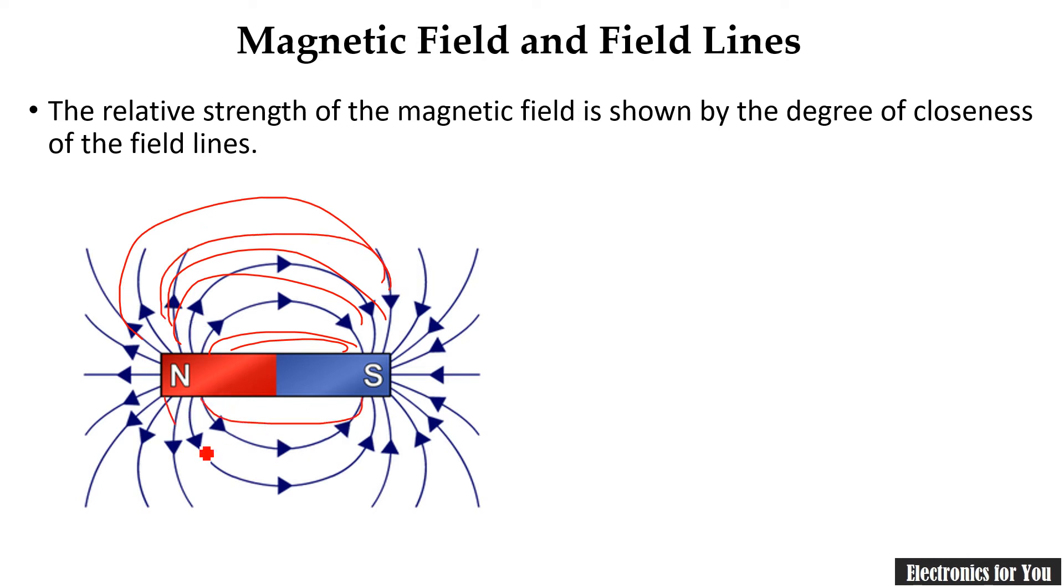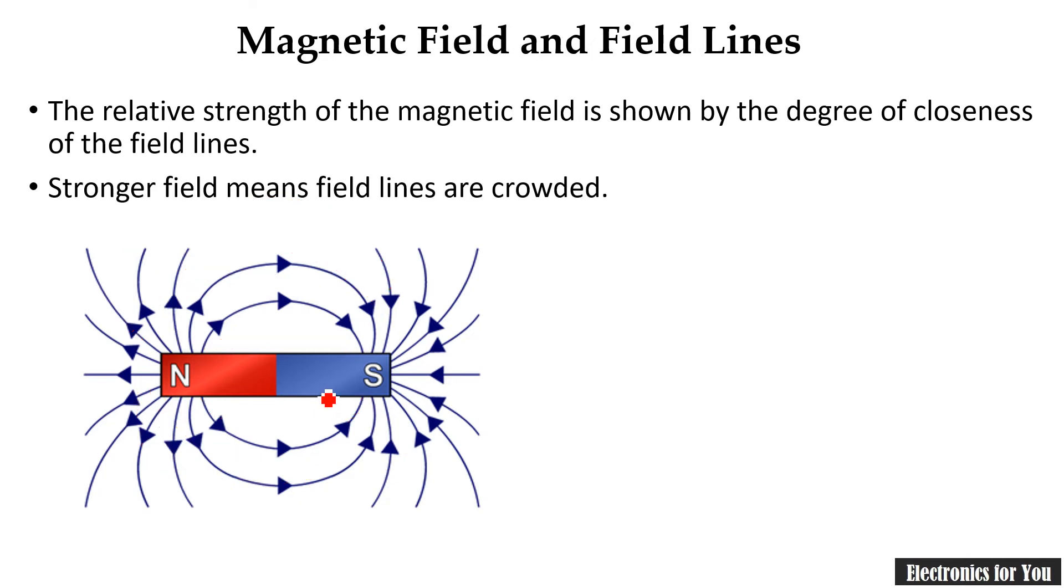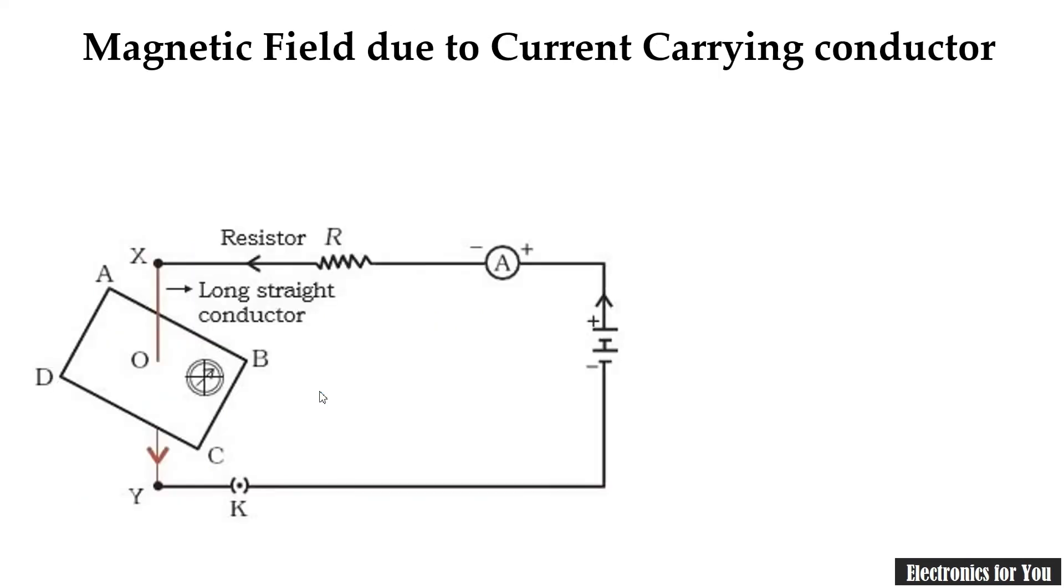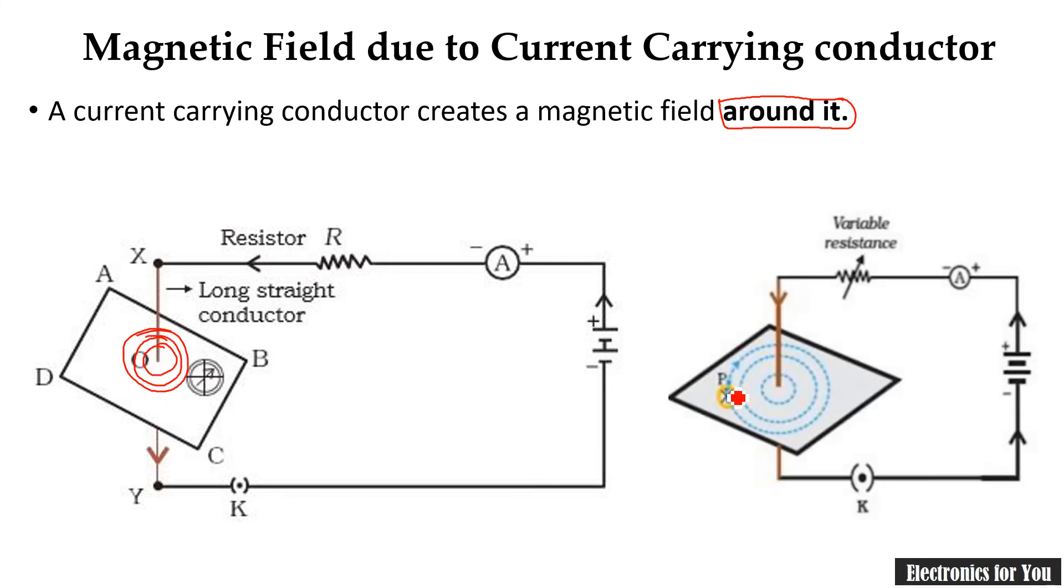Therefore related magnet will be more powerful. These are the properties of magnetic lines of force. Now let us again move to the same experiment, magnetic field due to current carrying conductor. So if the current is passing over here, the magnetic field is generated around it. Here the around it word is used, it means that the magnetic field will be generated around it just like this, and it will have some direction also.